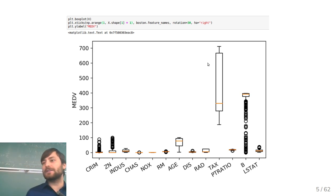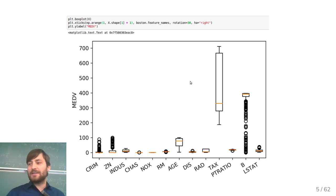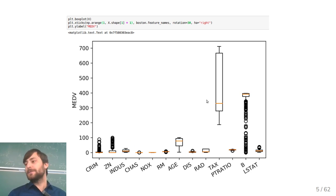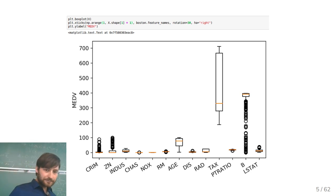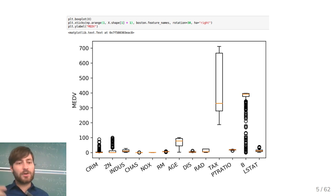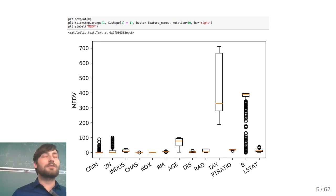Looking at a pandas box plot makes the scale differences even clearer — the variance of some variables is quite different, and most of them are not normally distributed; they're skewed in some way. To illustrate why scaling is important, let me go back to K-Nearest Neighbors.